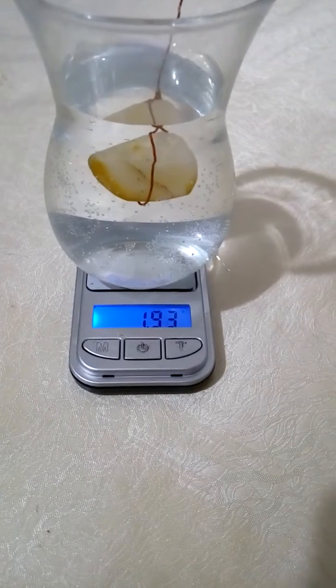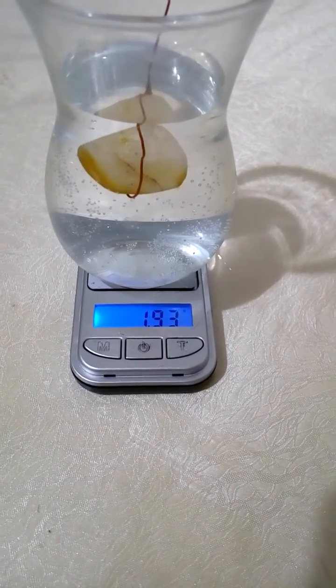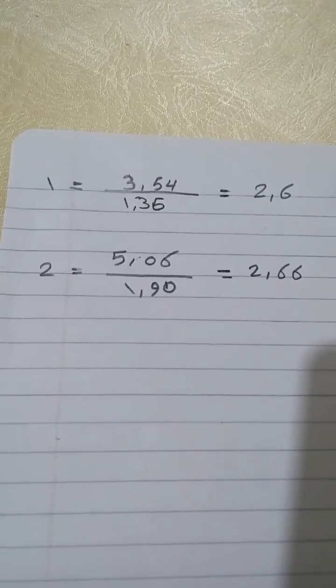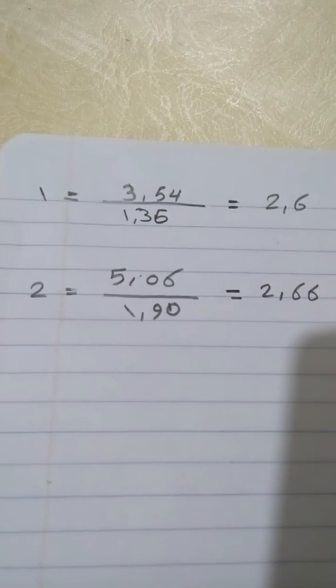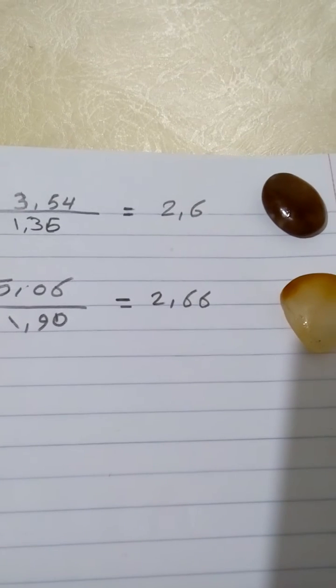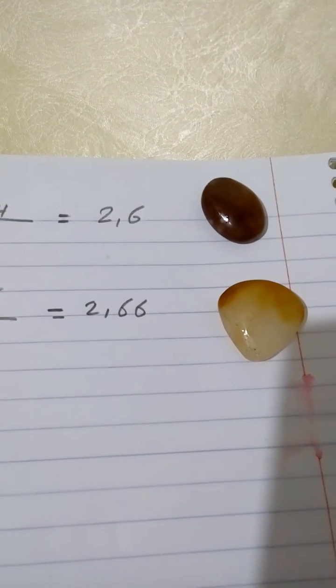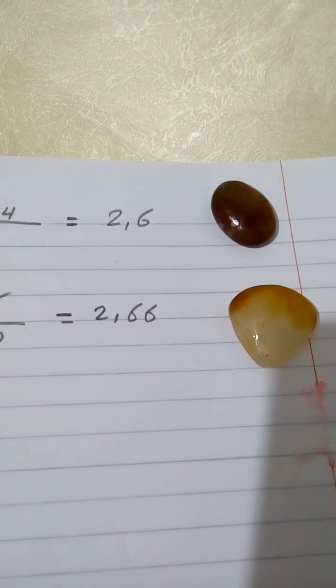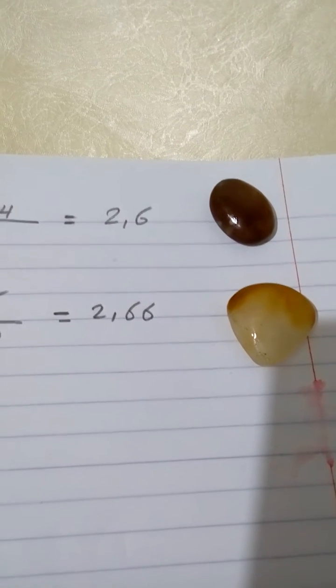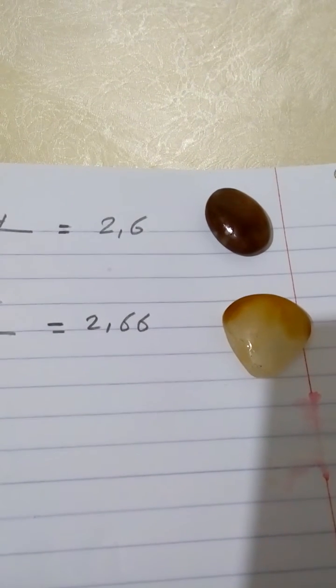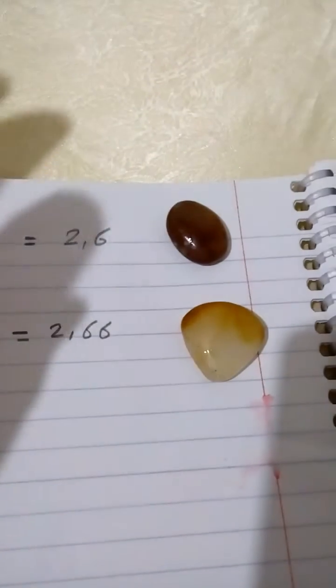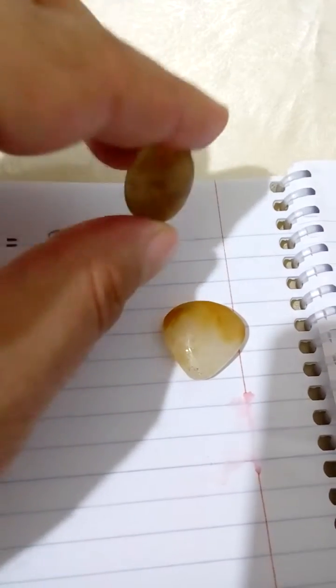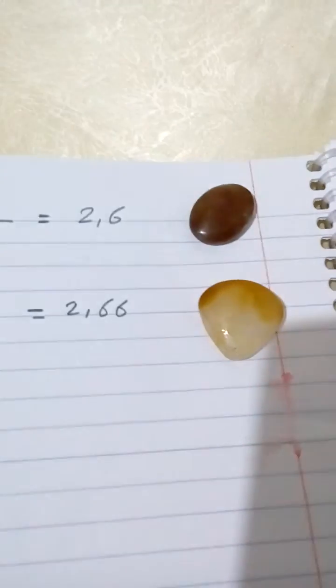We do the calculations to calculate the density of each stone. After doing the calculations, we find that the first stone has a density of 2.6. We know that the average range of agate density is from 2.58 to 2.62, so we find this stone is agate because its density is in the range.